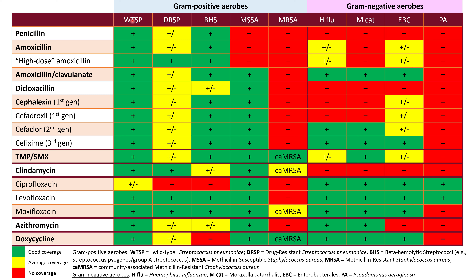On this spectrum chart, we have viridans strep, strep pneumo, drug-resistant strep pneumo, beta-hemolytic strep, MSSA, MRSA, and some gram-negatives. In particular, we are going to focus on beta-hemolytic strep, MSSA, and MRSA. Penicillin has excellent activity against beta-hemolytic strep, but no activity against MSSA or MRSA.